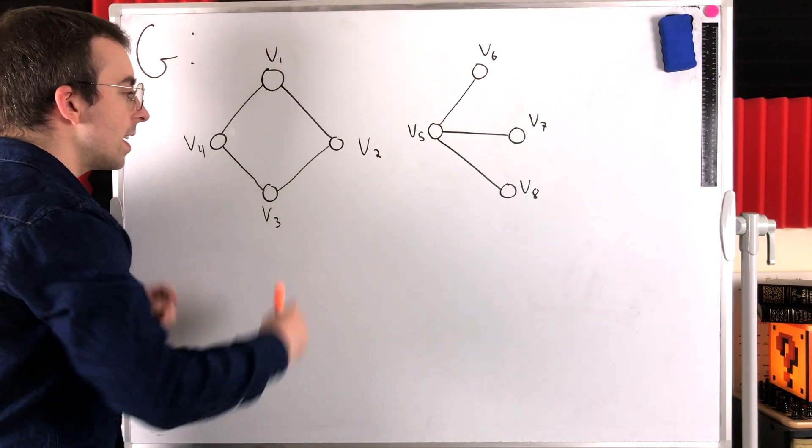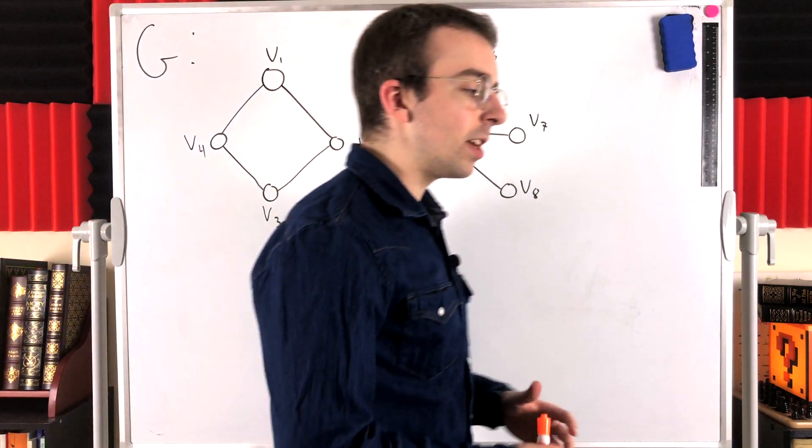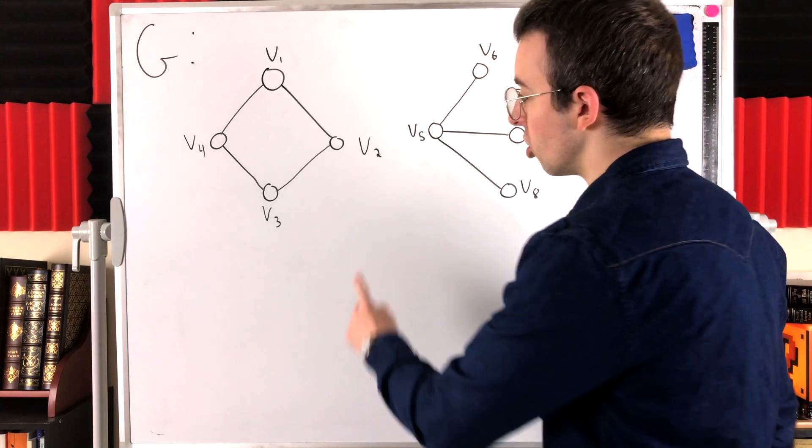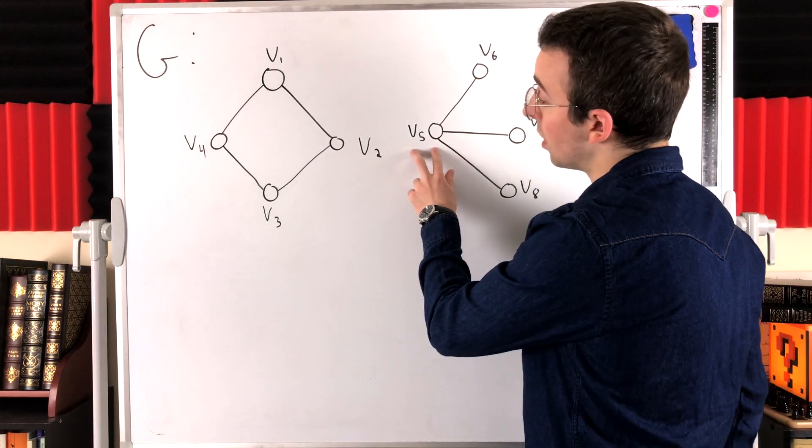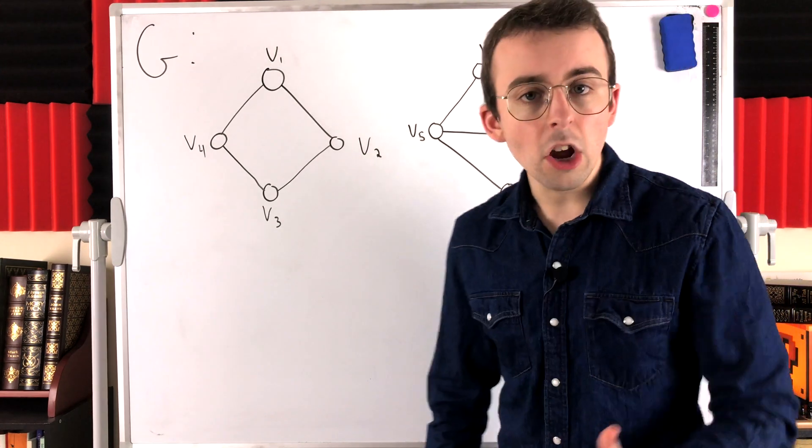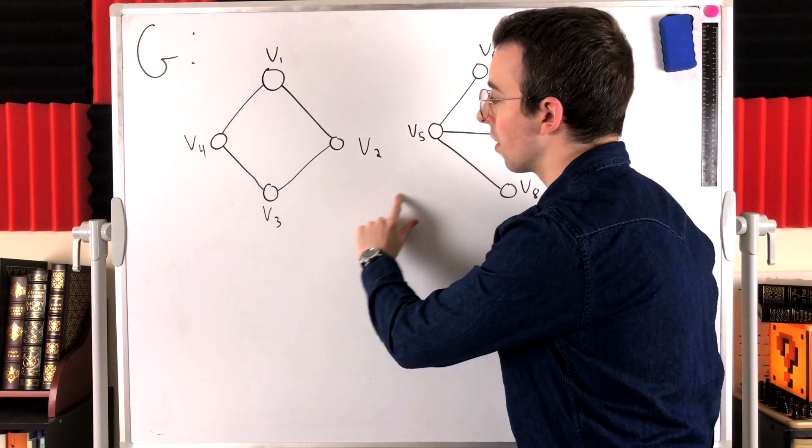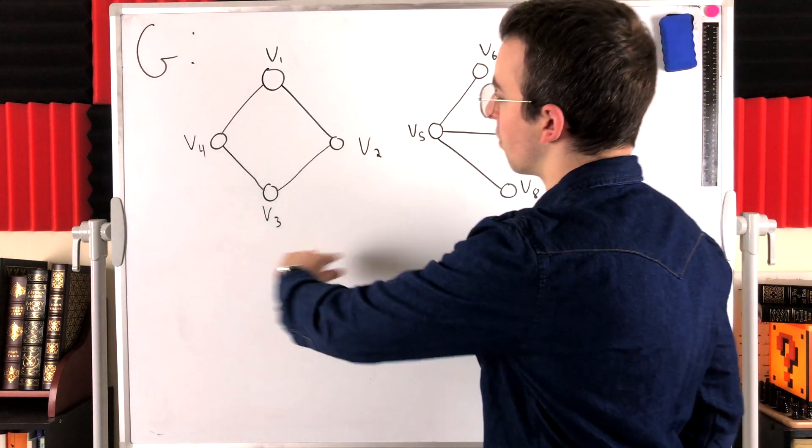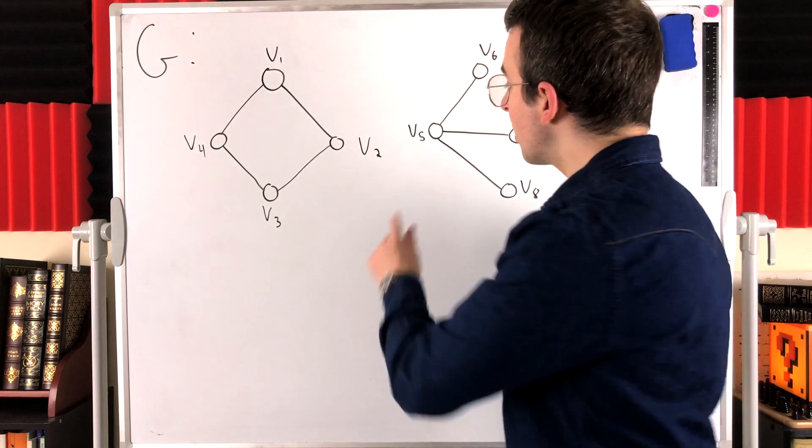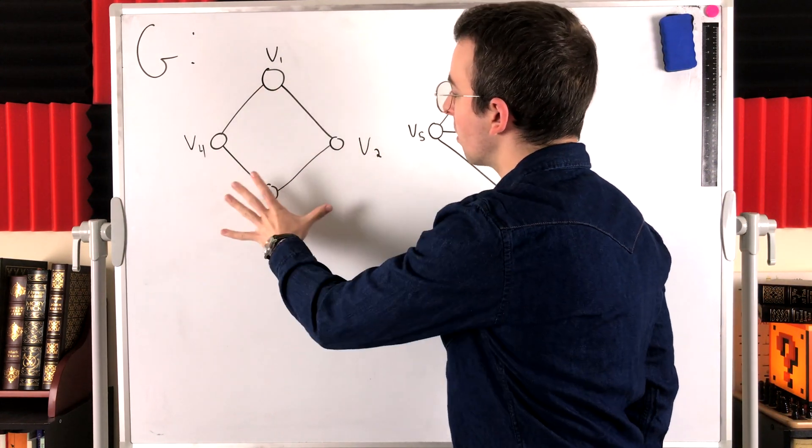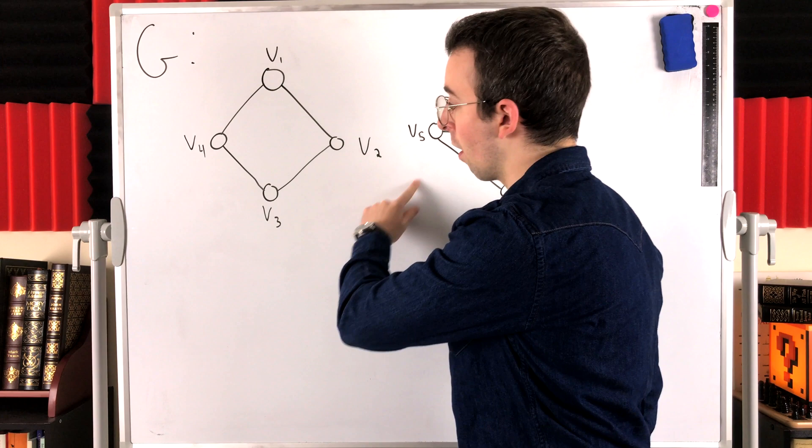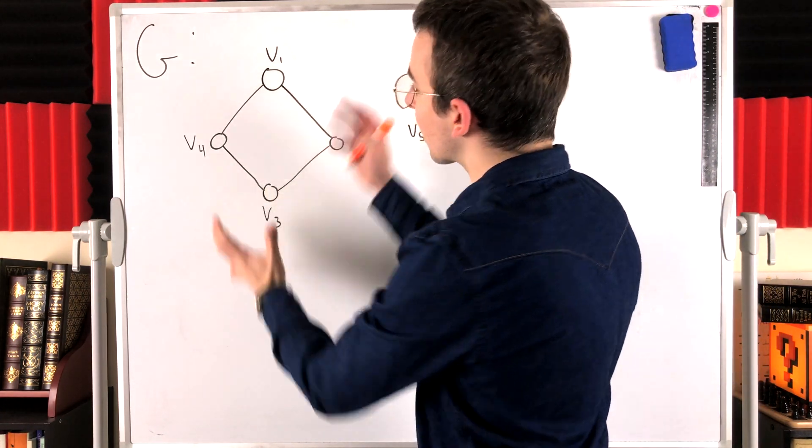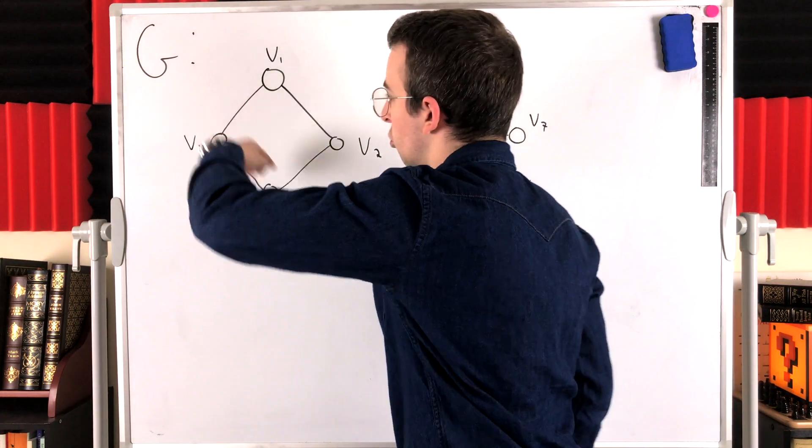So this part of G right here is a component of G. A way to think about what that means is that if we consider any vertex of G not in this component, like the vertex V5, for example, we know there cannot exist a path going from V5 to this component. Because if there was a path from V5 to one of these vertices, then we could include V5 in this subgraph along with that path from V5 to one of the vertices.